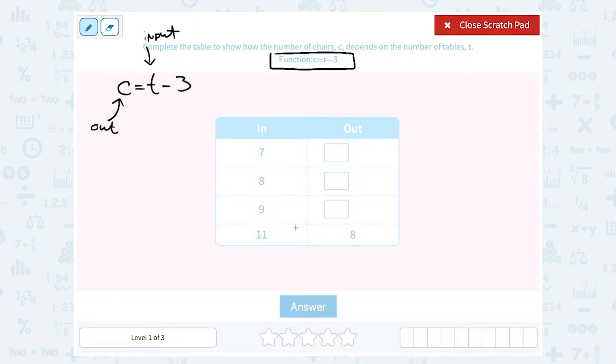You can also tell that if you look at the example in the table. When they put in 11, they said 11 minus 3, and that gave them the output, or answer, 8. So what we want to do is follow that pattern to figure out the other numbers in our table.